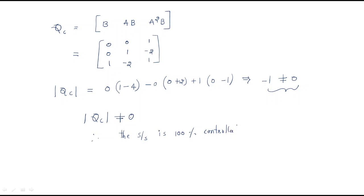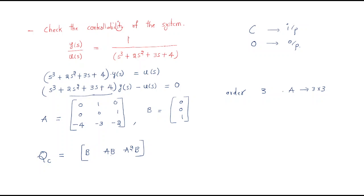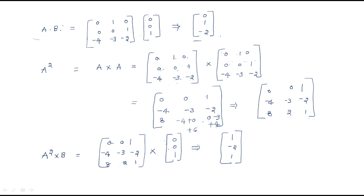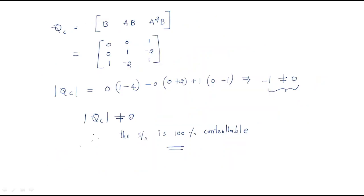Since the determinant of the controllability matrix is not equal to 0, the system is 100% controllable. That means we can control the input, and by controlling the input we can change the state of the system. So whenever a transfer function model is given, find the transition matrix and input matrix, form the controllability matrix [B, AB, A²B], find its determinant, and if it's non-zero the system is fully controllable. Here we got -1 ≠ 0, so the system is 100% controllable. I hope all of you understood the session, thank you.